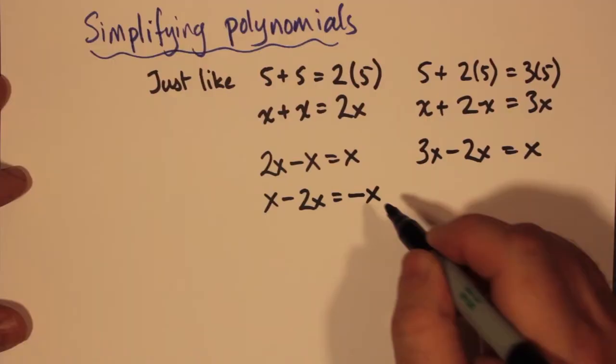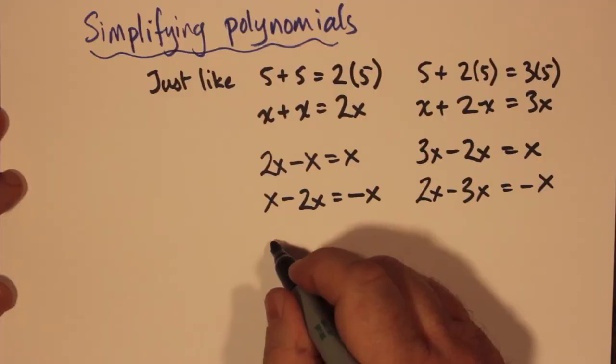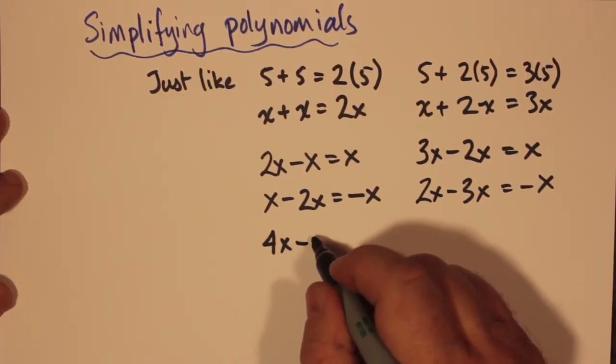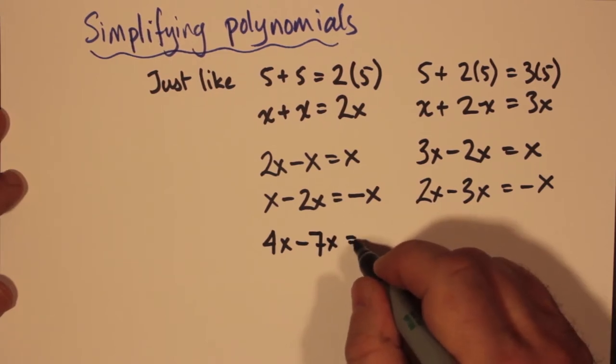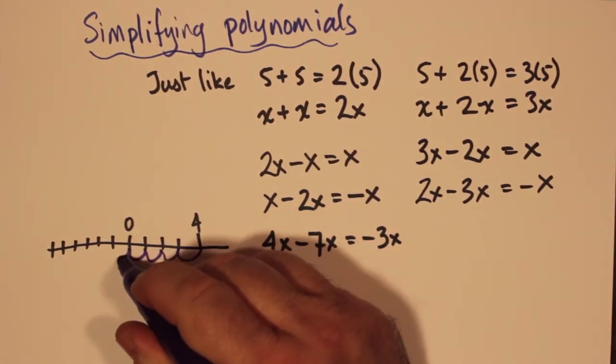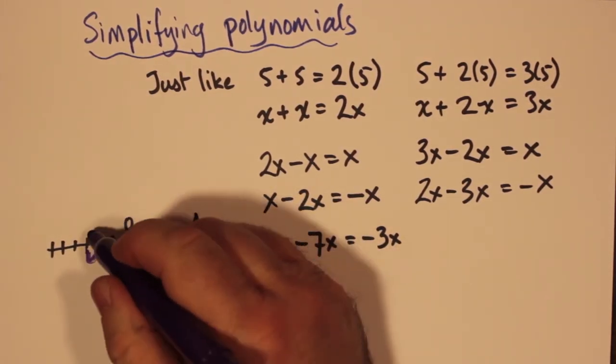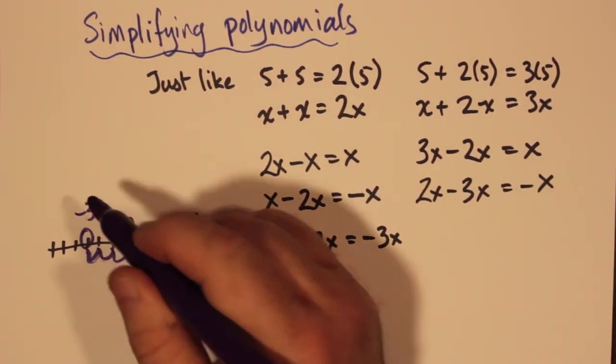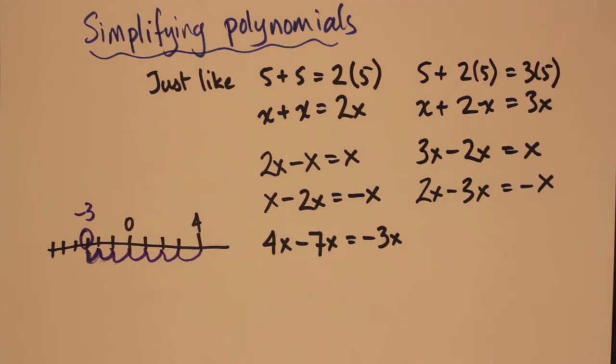x - 2x is like saying 1(x) - 2x, so x - x is 0, but we're subtracting x again, so that's just -x. How about if we have 4x - 7x? If we think of a number line where we have 4, which is 4 more than 0, and we count backwards because we're subtracting 7x, we land on -3. So 4x - 7x is -3x.